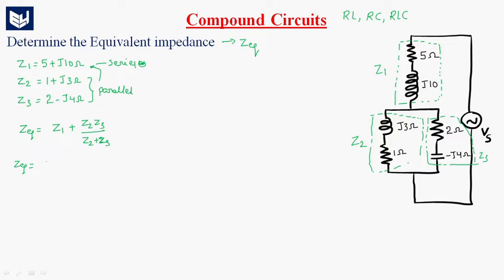Z equivalent is equal to 5 plus J10 plus (1 plus J3) times (2 minus J4) divided by (1 plus J3 plus 2 minus J4).